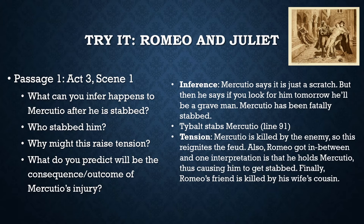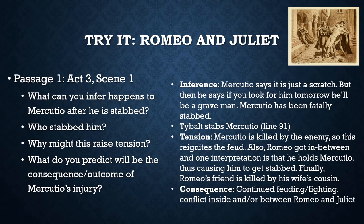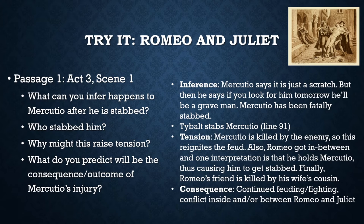What do you predict could be the consequence or outcome of Mercutio's stabbing? Well, this could continue the feuding and fighting, and it may even expand to other members of the families as well as the community. This conflict also arises inside both Romeo and Juliet, and possibly a conflict arising between them. Juliet is going to have to choose whose side to take — her husband's or her cousin's.